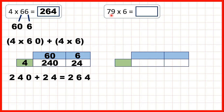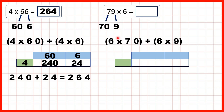Now we have 79 times 6. We can partition 79 into 70 and 9. So now what we can do is multiply 6 by 70, then multiply 6 by 9, and then add up our answers. We can have our single-digit number on the left of our grid and our partitioned number — so 70 and 9 — on top. Now 6 times 70 is 420, because 6 times 7 is 42 and then we need our end zero.